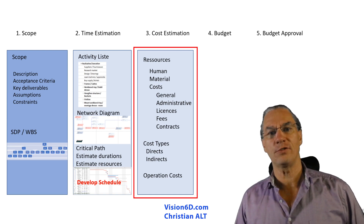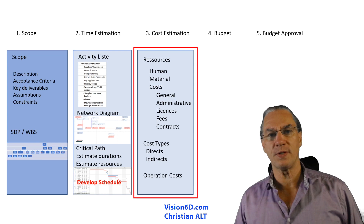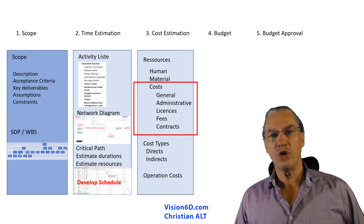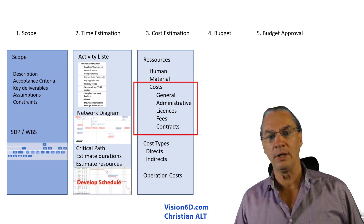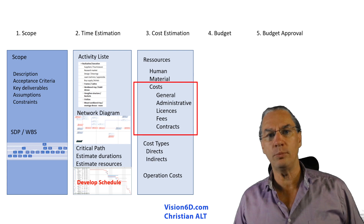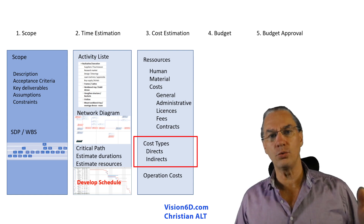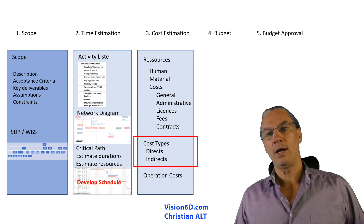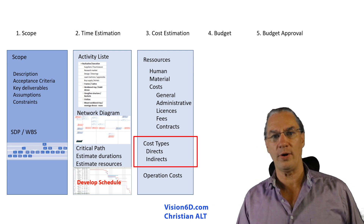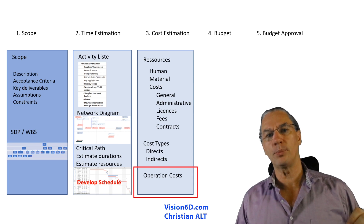For cost estimation, we need to know the cost of the different resources. We have resources of type human, resources of type material — material to build — and resources of type costs. Those can be general costs, administrative costs, licenses such as for software, fees that we have to pay, and contracts when we are using a contractor. There are also different types of costs: direct costs, which you can directly attribute to the project, and indirect costs like the renting of a factory or offices. One thing also really important to keep in mind is the operation cost.